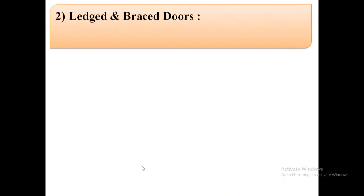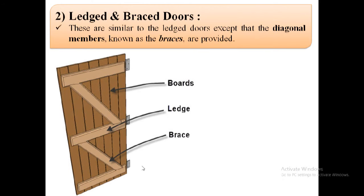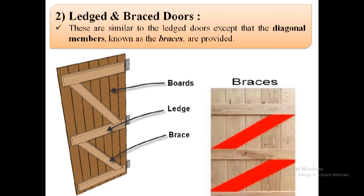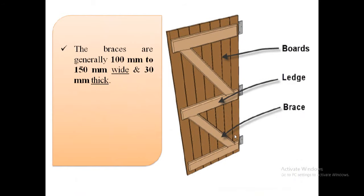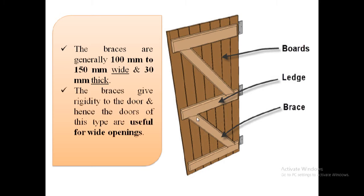The second type of door is ledge and brace doors. These are similar to ledge doors except that diagonal members known as braces are provided. In this image we can see the member shown in red color is known as braces. These diagonal members, that is the braces, are generally 100 mm to 150 mm wide and 30 mm thick. These braces give rigidity to the door and hence doors of this type are useful for wide openings.